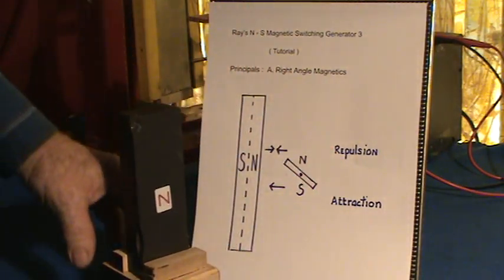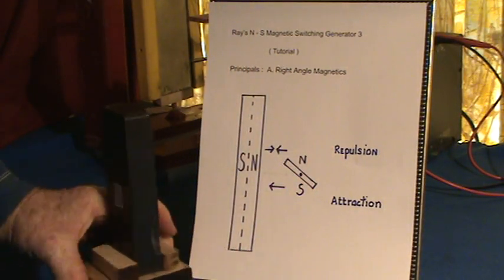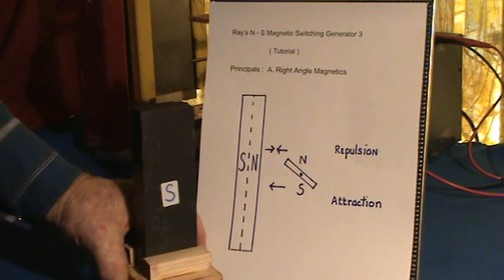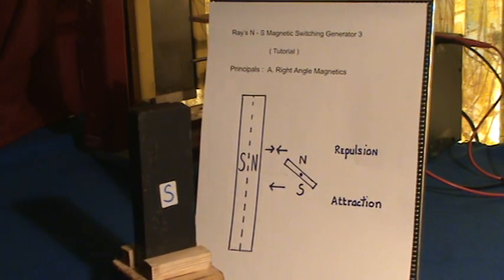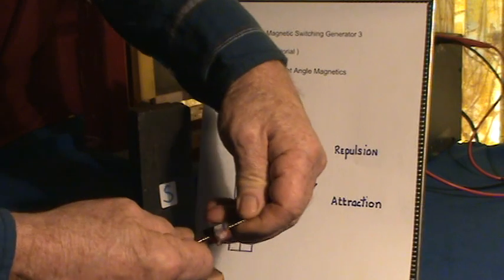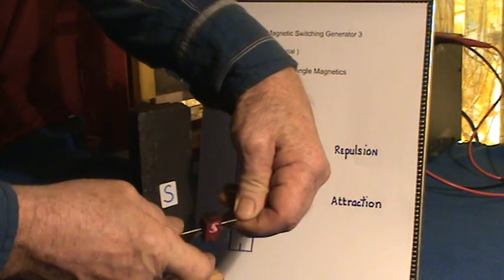On the opposite side as the large magnet is rotating we come around and we have an opposite effect. It pushes down.